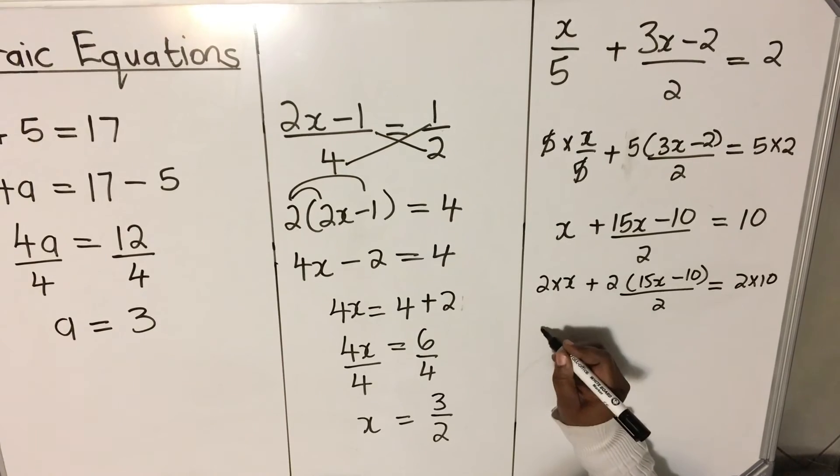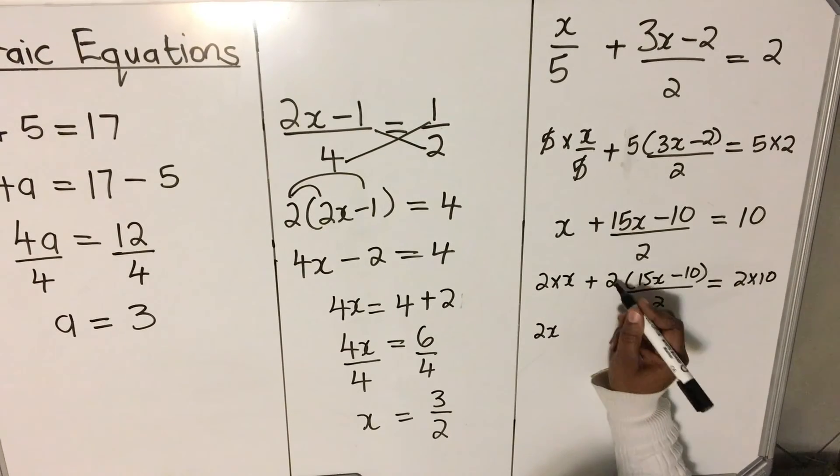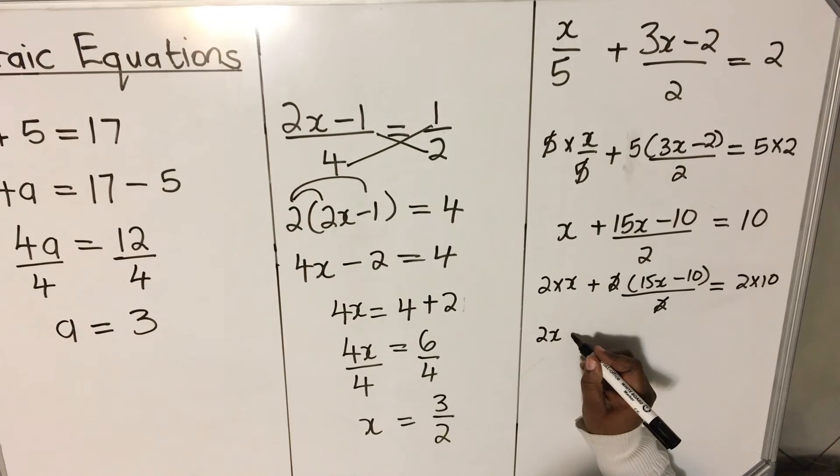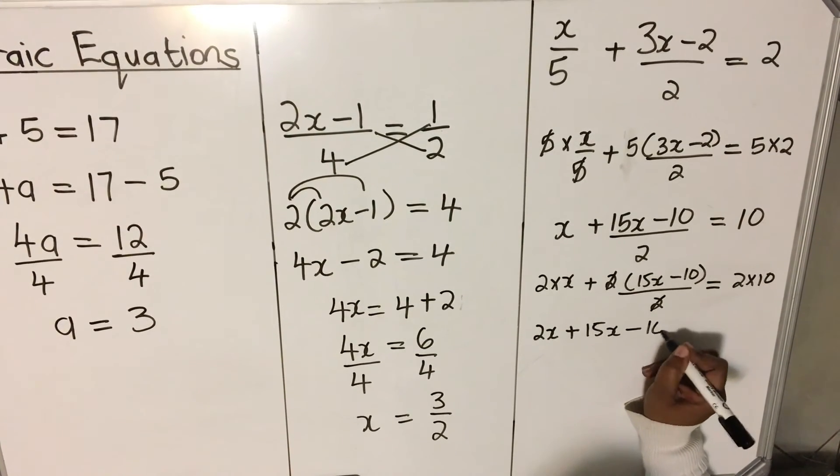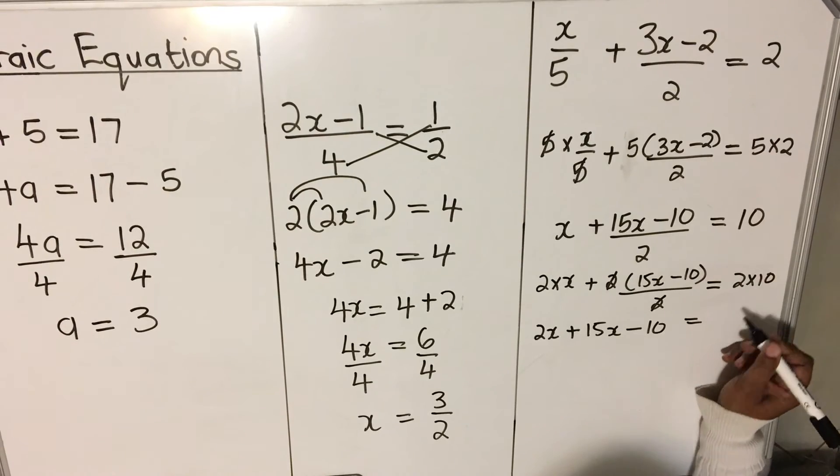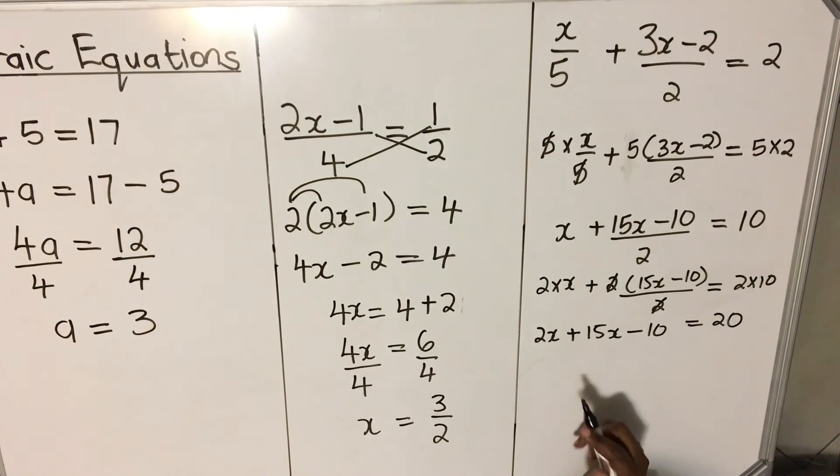2 times x will be 2x. The 2 will cancel. The 2 will be left with plus 15x minus 10. And then 2 times 10 is 20.